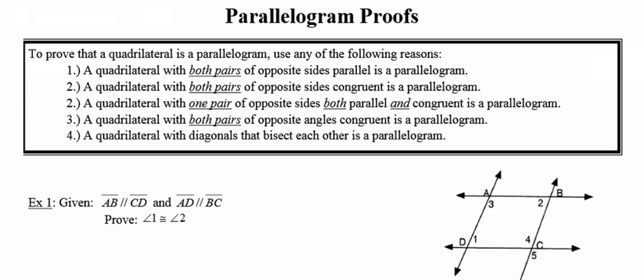Number two, you can show that both pairs of opposite sides are congruent and that will make your quadrilateral a parallelogram. Or you can show that your quadrilateral has one pair of opposite sides that are both parallel and at the same time congruent.